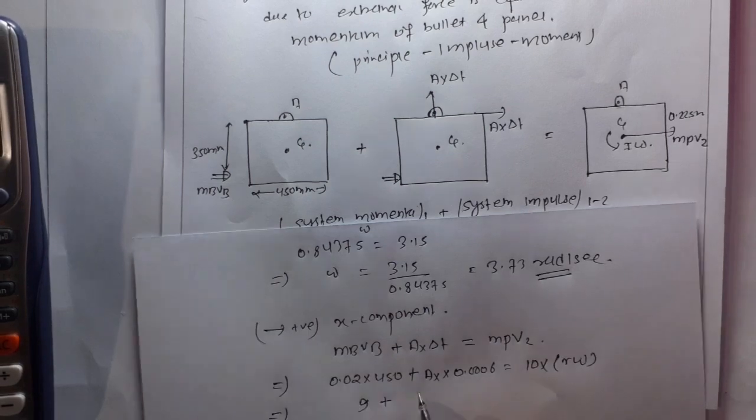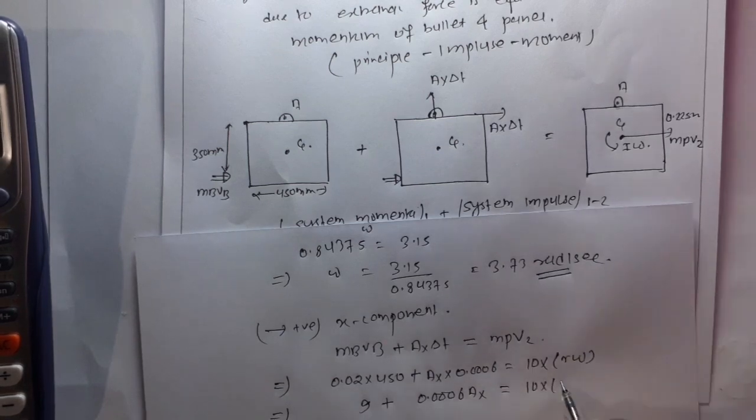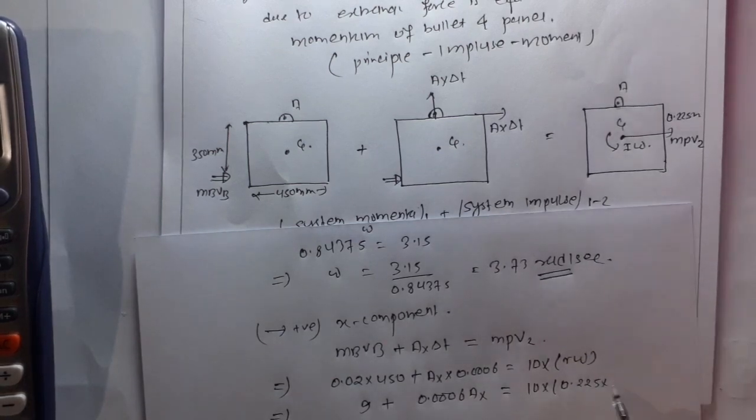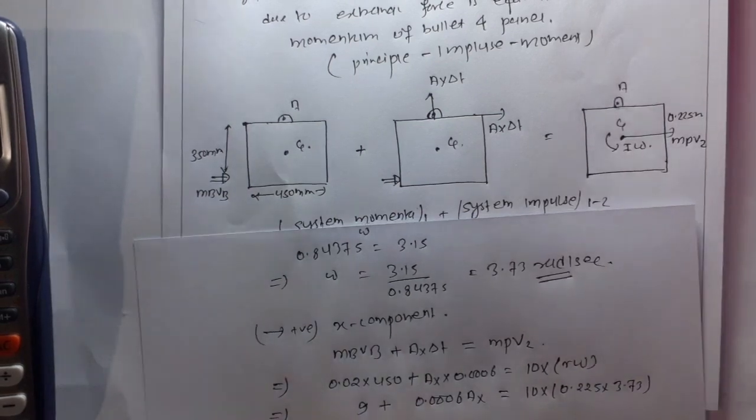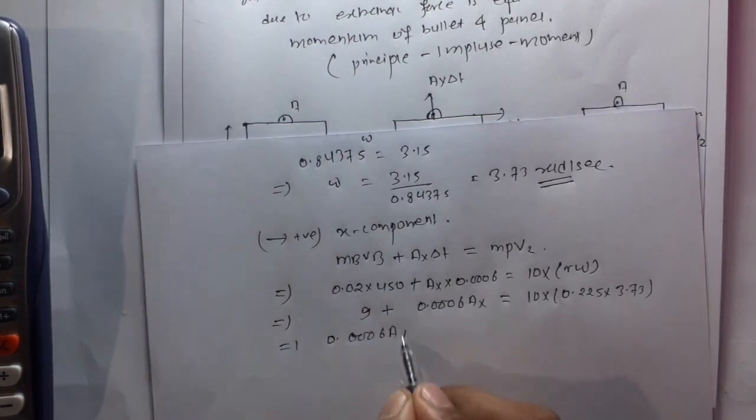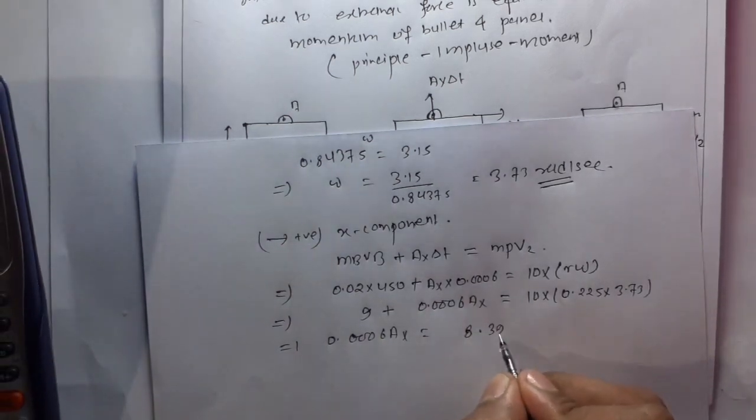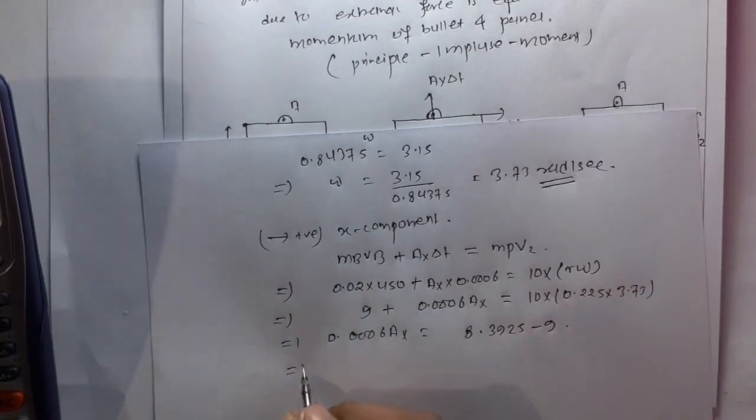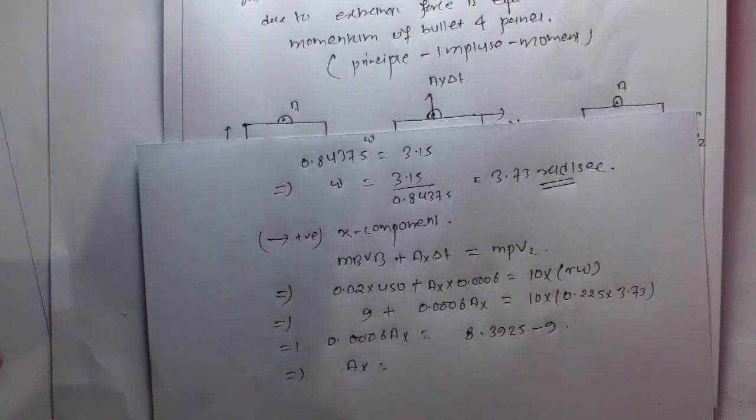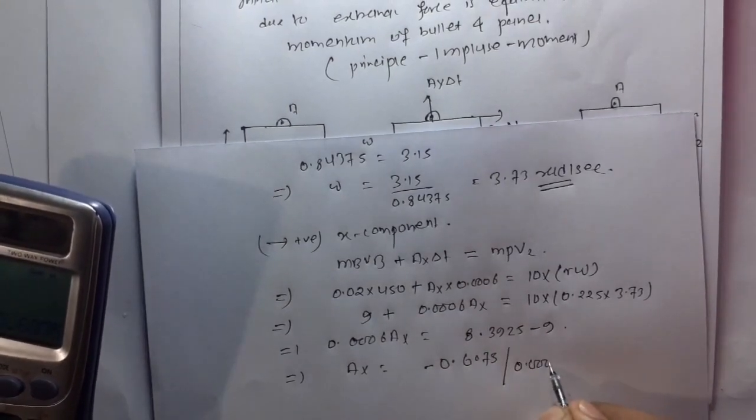This implies 0.02 into 450 plus Ax times 0.006 is equal to the mass times v2. Since v is r times omega, 9 plus 0.006 Ax is equal to 0.225 times omega.